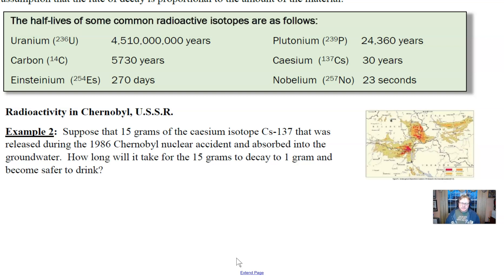Suppose that 15 grams of the cesium isotope CS-137 released during the 1986 Chernobyl nuclear accident was absorbed into the groundwater. We want to know how long it will take for that 15 grams to decay to 1 gram — let's say 1 gram would be safe to drink spread out through so much water. This is a bit simplified; you don't normally measure radioactivity in grams, but we're simplifying so we can work the mathematics. All radioactive decay problems operate under the principle of direct decay, which means we can use Ce^(kt).